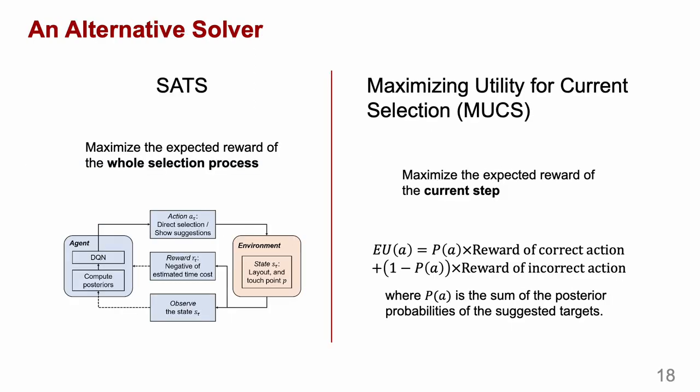We summarize the reward for each type of action resulting in correct and incorrect selection in the table. As there might be more than one selection attempt to successfully select a target, SETS maximizes the total expected reward of the whole selection process until a successful selection. We also consider an alternative solver, maximizing utility for current selection, noted as MUCS, that considers only the current selection attempt. The MUCS method computes the expected utility based on the given equation, where PA is the sum of the posterior probabilities of the suggested targets.